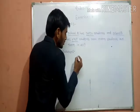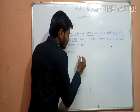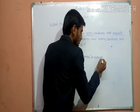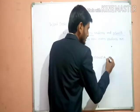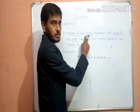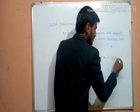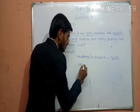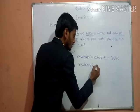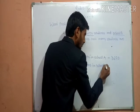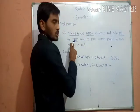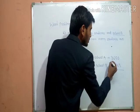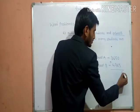Write: students in School A — 3,650. Then students in School B — 4,765. So add both the numbers. 5 plus 0 is 5. 6 plus 5 is 11, carry 1.